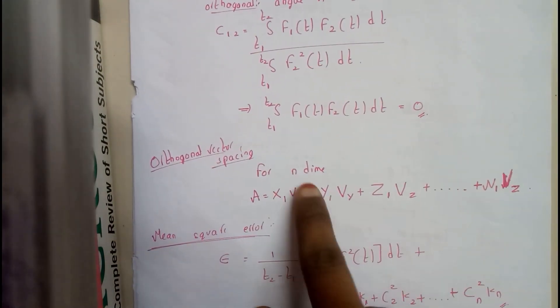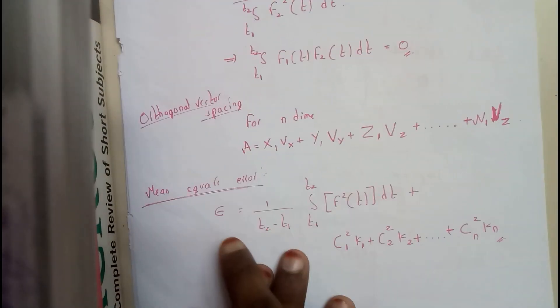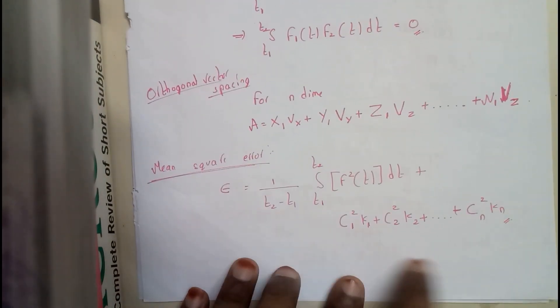Orthogonal vector spacing in n-dimensional - it is nothing but dimension. The formula for mean square error will be this, just go through these formulas.